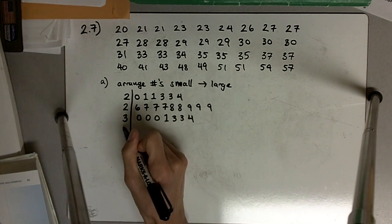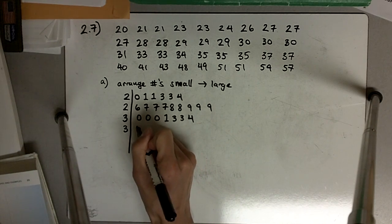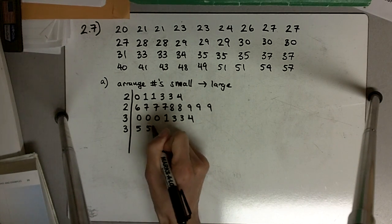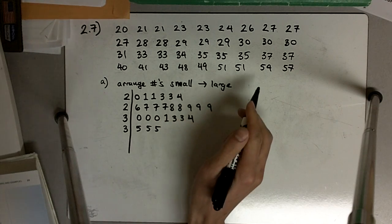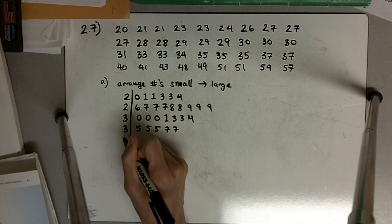35 is officially part of the upper 30s, so that's going to go 35, 35, 35, 35, 37, 37.